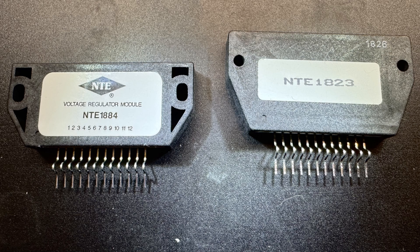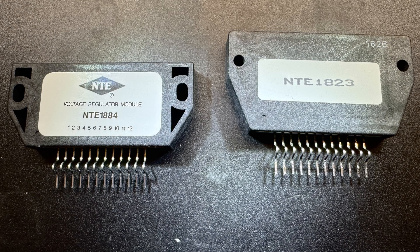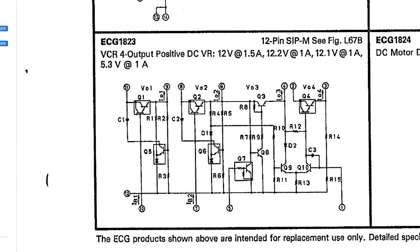They were in a module form. You can see here on one of the datasheets the NTE is a replacement part, but the original part was an ECG part. Let's look at the 1884. It was a 12-pin SIP that was a three voltage regulator, so it regulated 12.3 volts, 12.2 volts, and 5.3 volts. I think it's probably plus or minus 12, but I'm not quite sure. And then the other one is a four voltage regulator, the NTE 1823.